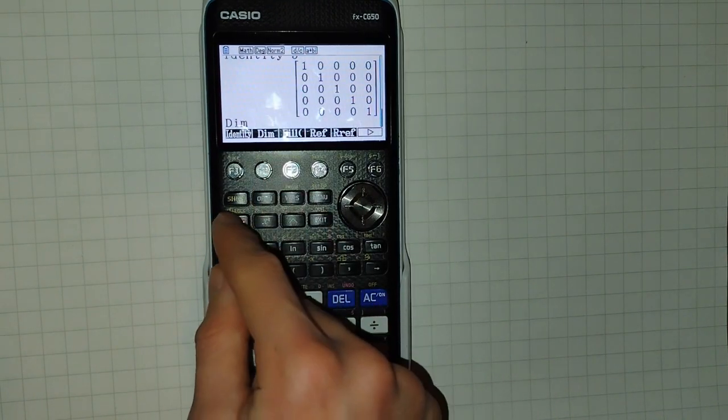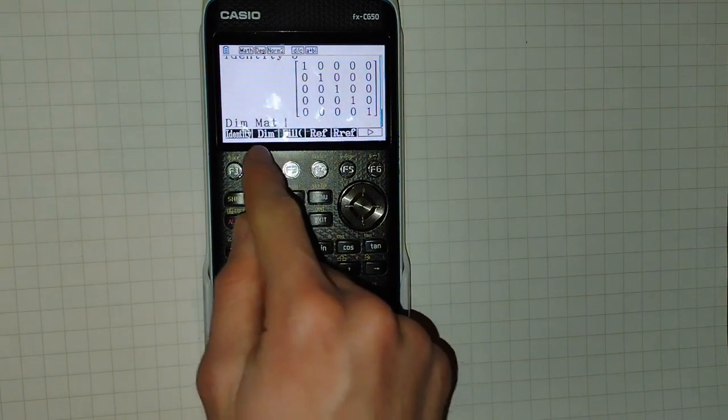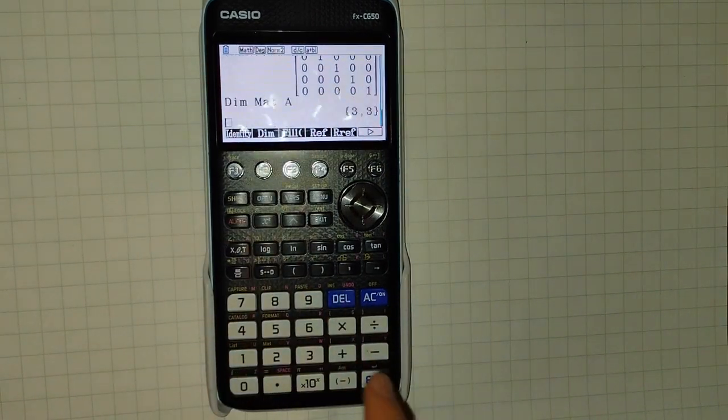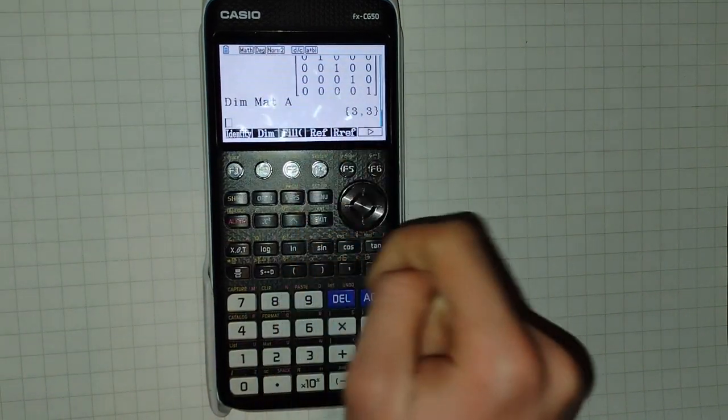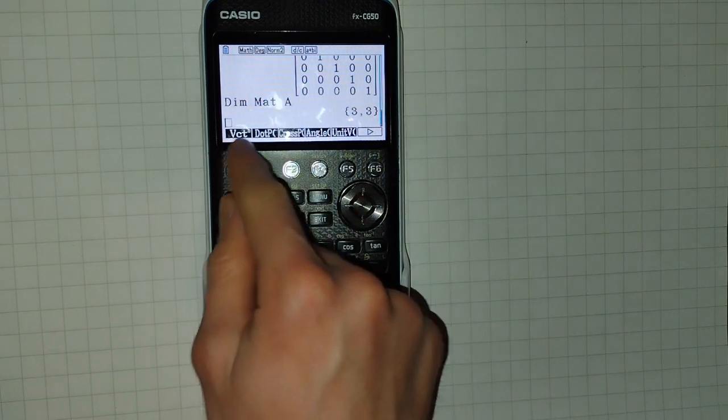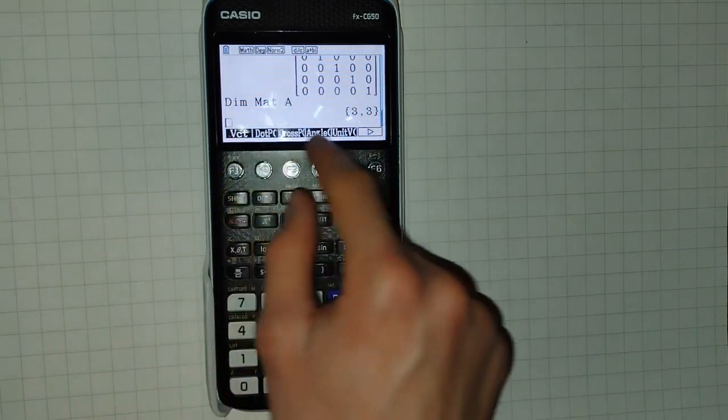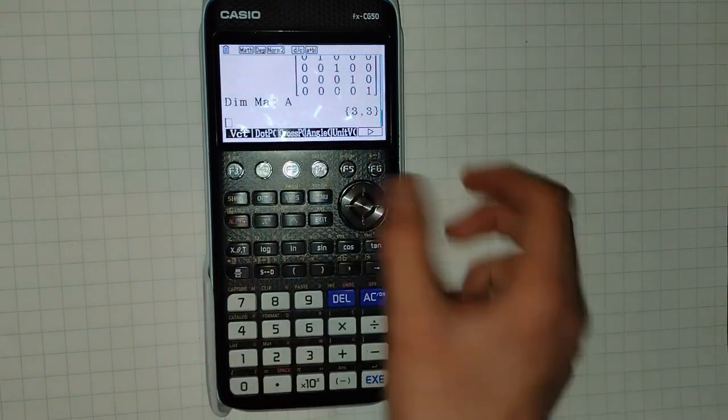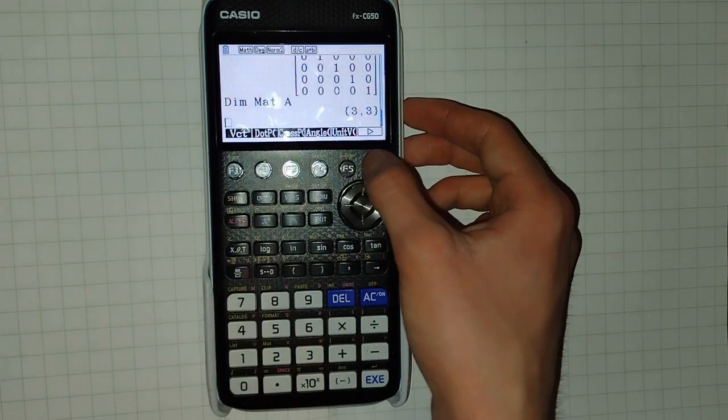You can get the dimensions of a matrix using the DIM keyword, and it returns this as a list. And you can do many other calculations that you would expect from matrices and vectors from this mode.